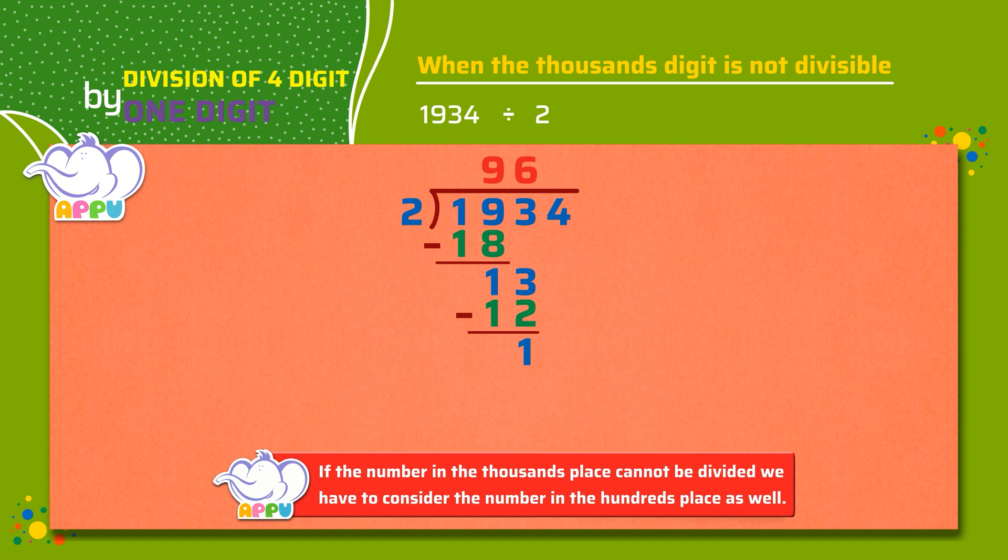Next, we bring down the number in one's place, which is four. So the number now becomes fourteen. We figure out how many twos does it take to make fourteen, which is seven. We multiply two and seven, we get fourteen. We subtract fourteen from fourteen, we get zero.